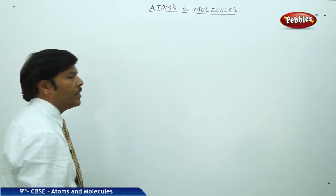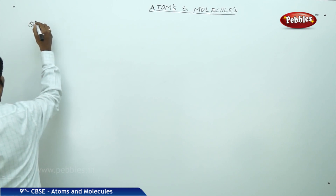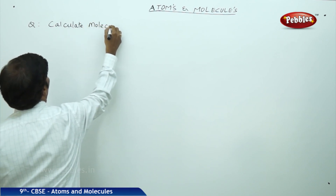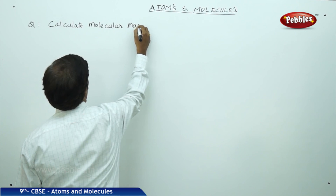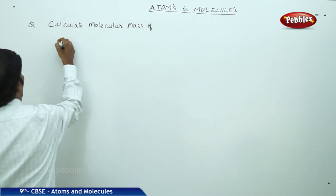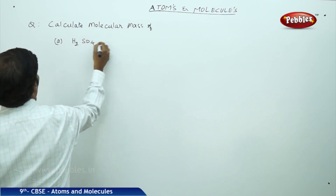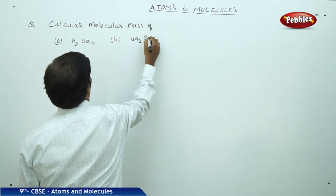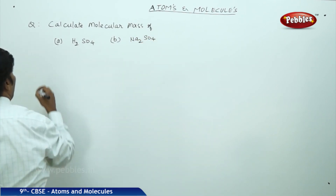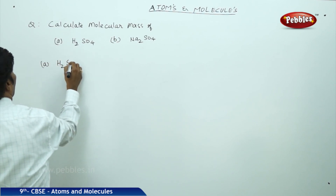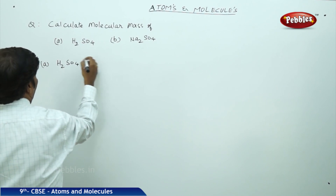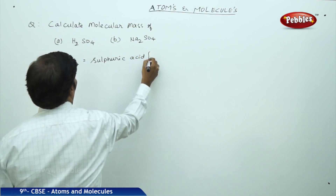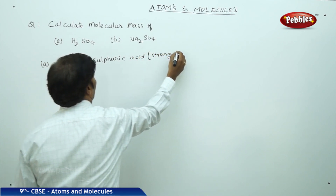Let us take a question: calculate the molecular mass of (A) H2SO4 and (B) Na2SO4 sodium sulfate. H2SO4 is sulfuric acid, which is a strong acid.